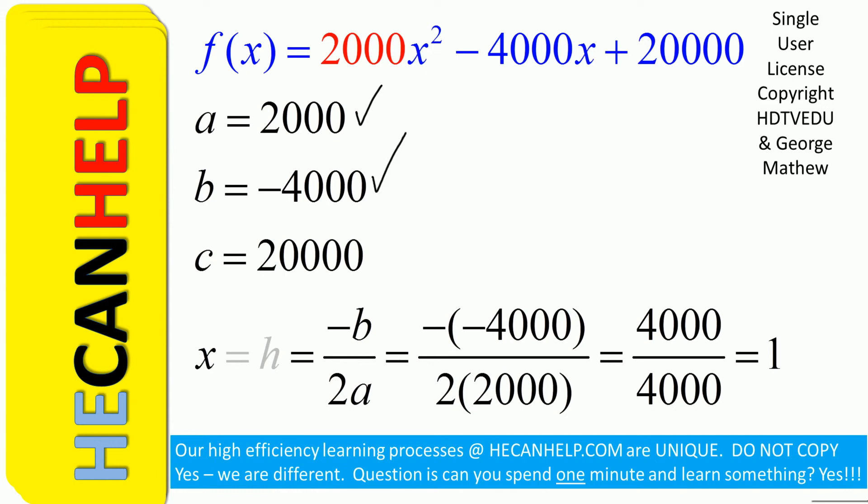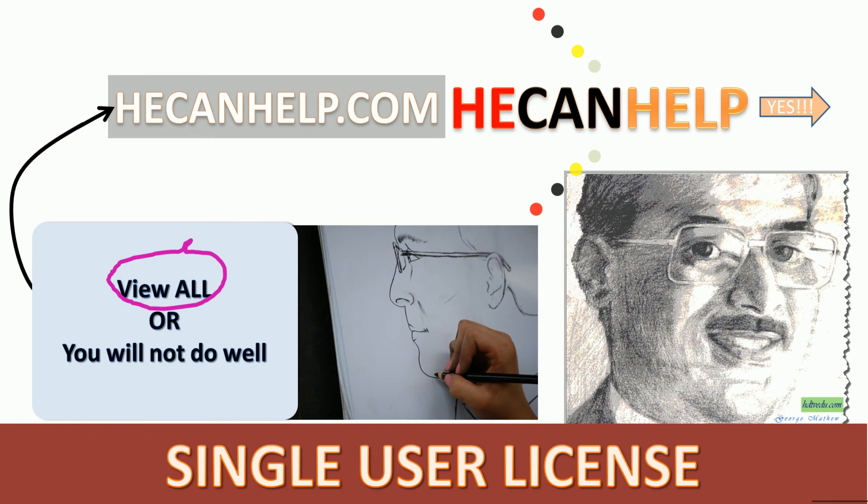a equals 2000, b equals negative 4000, c equals 20,000. Substitute for negative b over 2a and you have the axis of symmetry. Good luck.